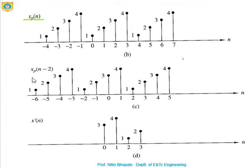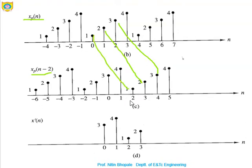Next is xp(n-2), which is the delayed or time-shifted version of xp(n). Whatever value you observe at a particular instant — for example, the value 3 at x(2) — gets shifted to x(4). Similarly, this 2 shifts here, and this 1 shifts here. The shifting is done by two locations, so this is how xp(n-2) is derived.